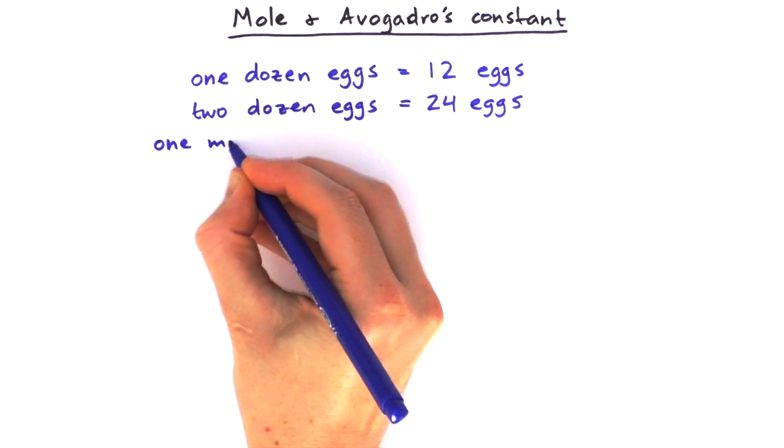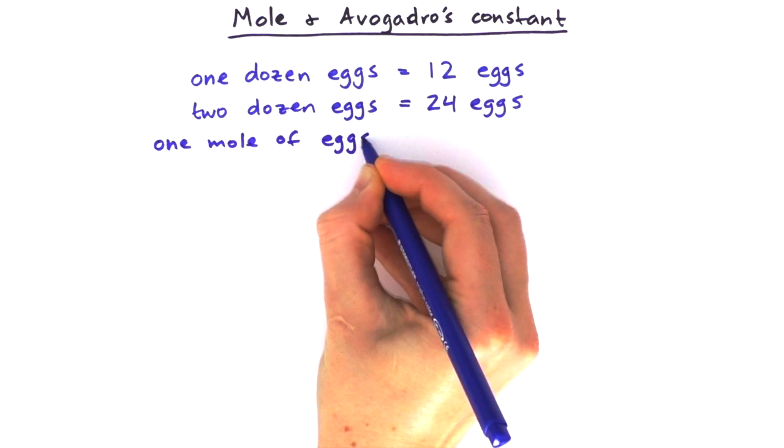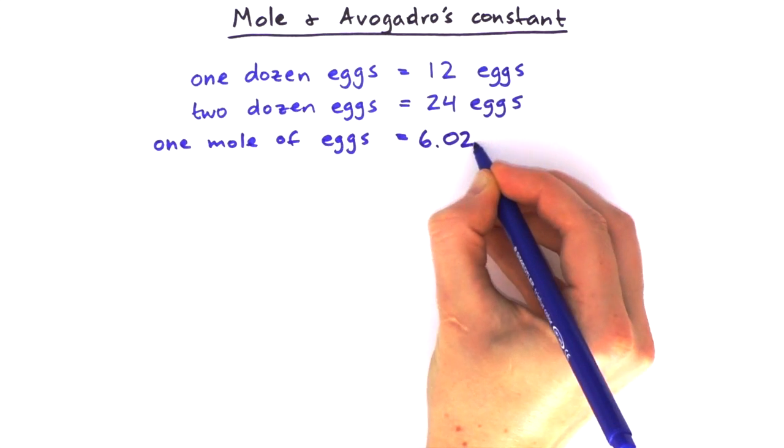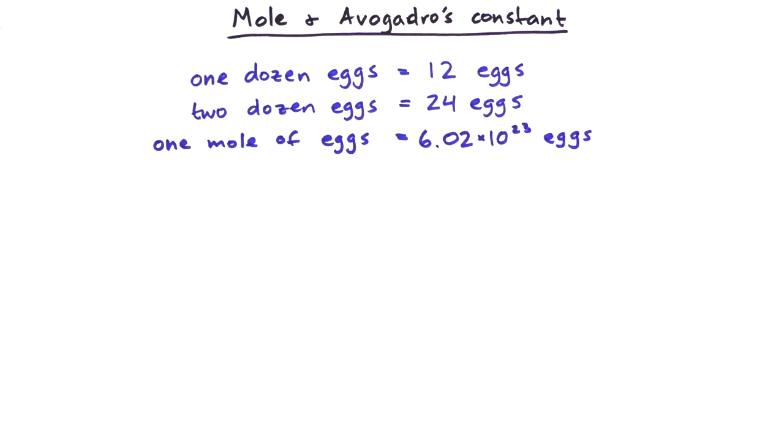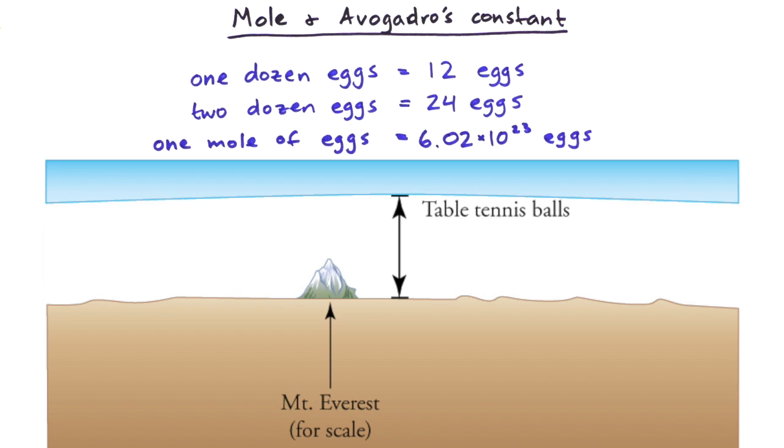Mole is just another number like dozen. We could have one mole of eggs, which would be 6.02 times 10 to the power of 23 eggs. It's just a number like dozen, but much, much bigger.